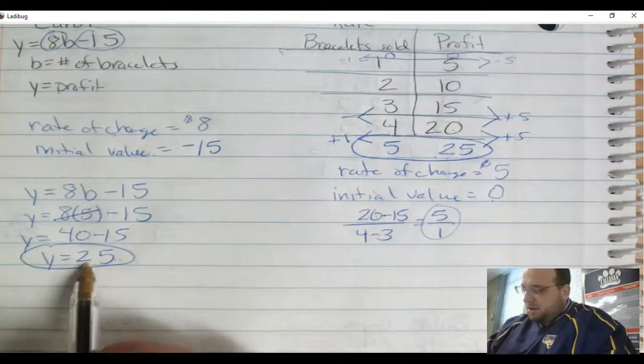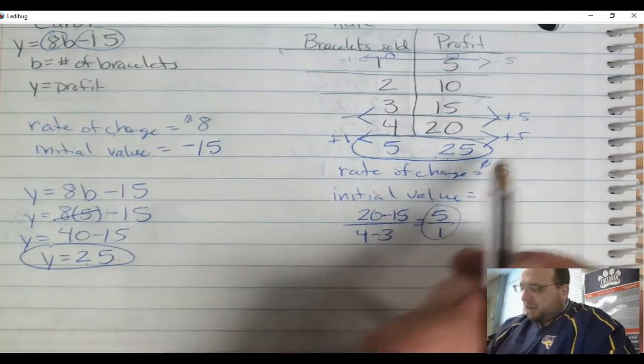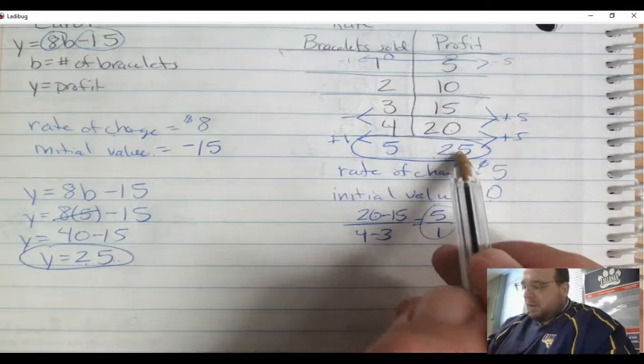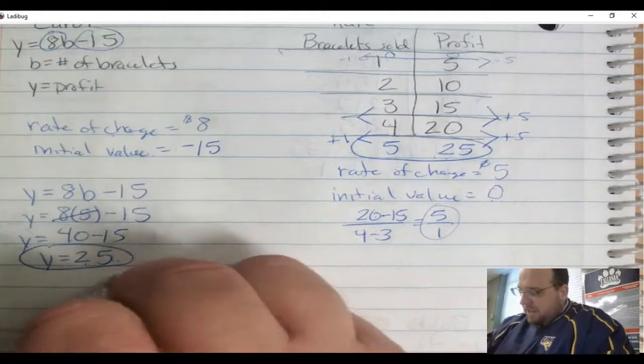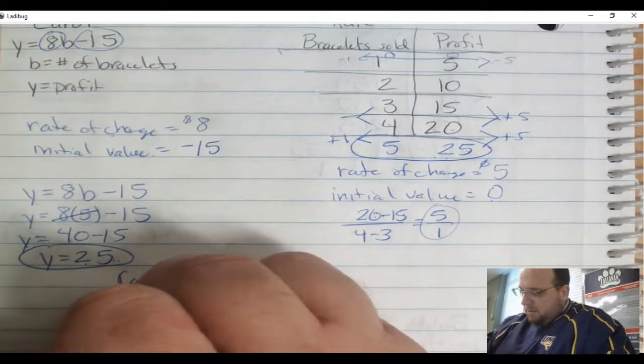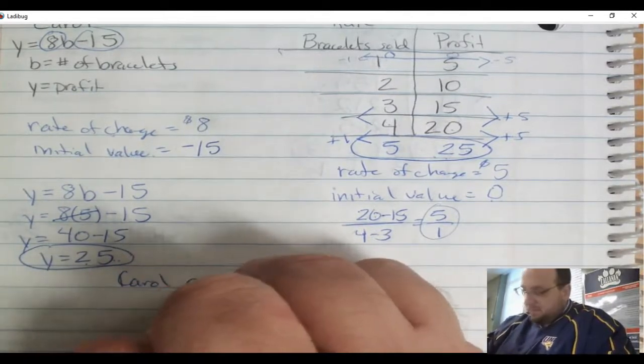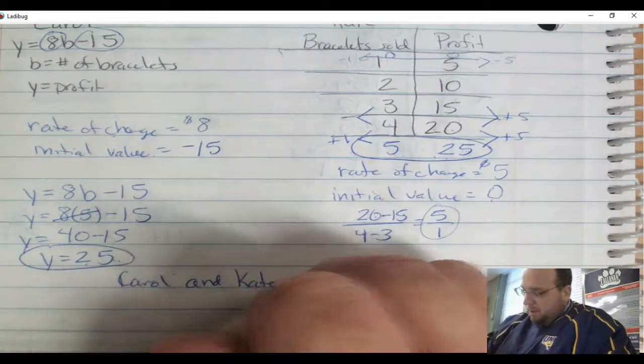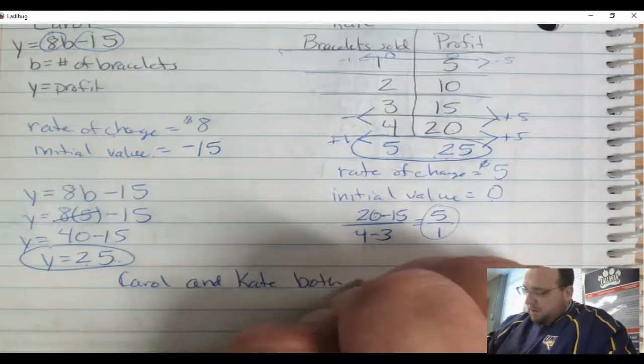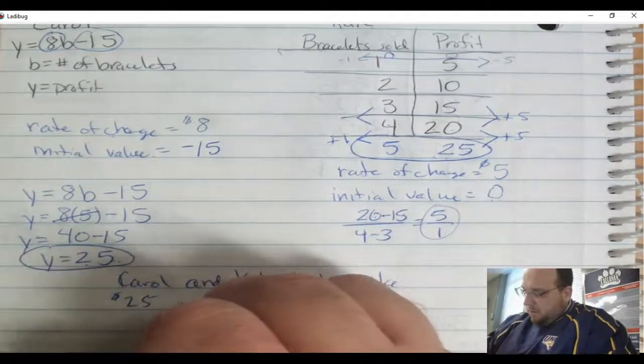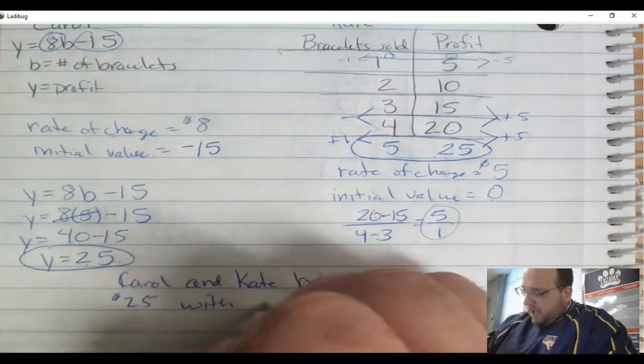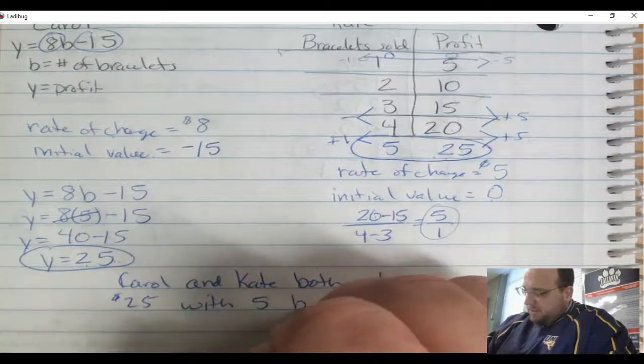So not only is Carol going to make a profit of $25, so is Kate. So actually, nobody makes more than the other. They make the same amount. Carol and Kate both make $25 with 5 bracelets sold.